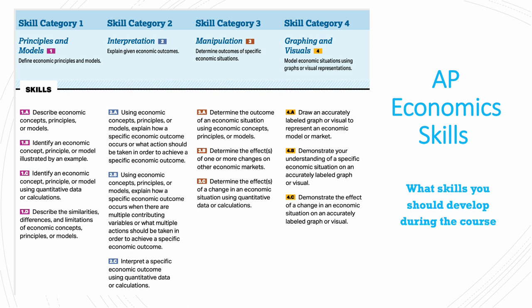The second skill category would be interpretation, which is to explain given economic outcomes — basically using economic concepts, principles, and models to explain how a specific economic outcome occurs, or what actions should be taken in order to achieve a specific outcome. You would also use these concepts or models to explain a specific outcome when there are multiple contributing variables, or what multiple actions should be taken to achieve a certain outcome, and you would interpret this information using quantitative data or calculations.